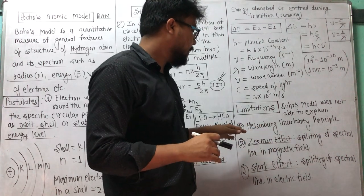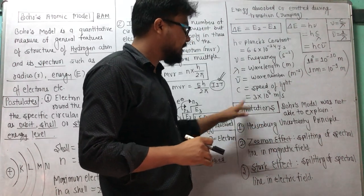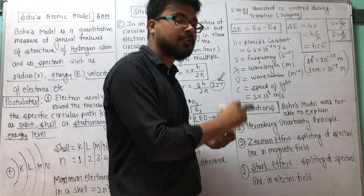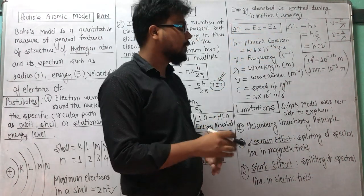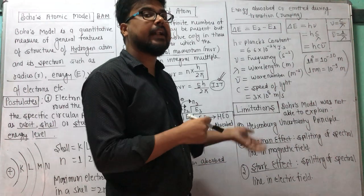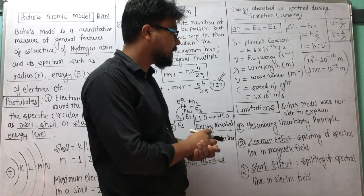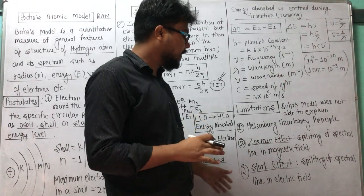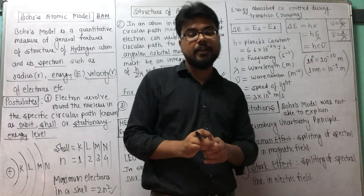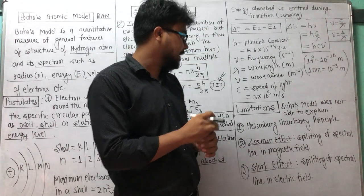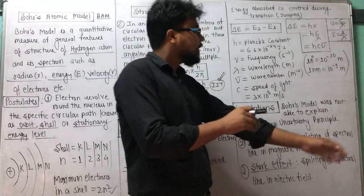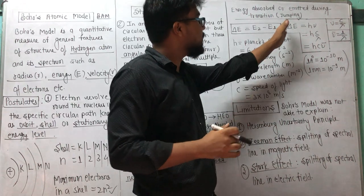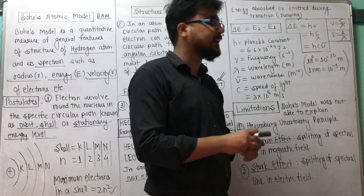Now the limitations of the Bohr model: he could not explain the following properties — the Heisenberg Uncertainty Principle, which we will discuss in brief in the next video lecture, the Zeeman effect, and the Stark effect. The Zeeman effect is the splitting of spectral lines in a magnetic field, and the Stark effect means the splitting of spectral lines in an electric field.